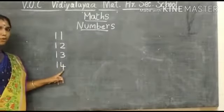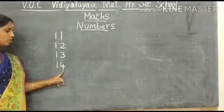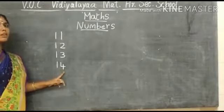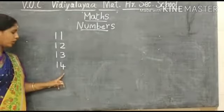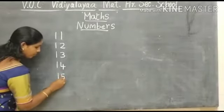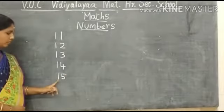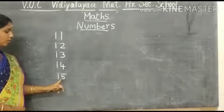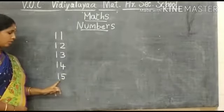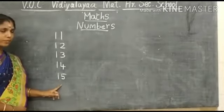1, 4. What number is this? 1, 4 — 14. What number is this? This is number 14. What number is this? 1, number 5, so 15. What number is this? This is number 15.